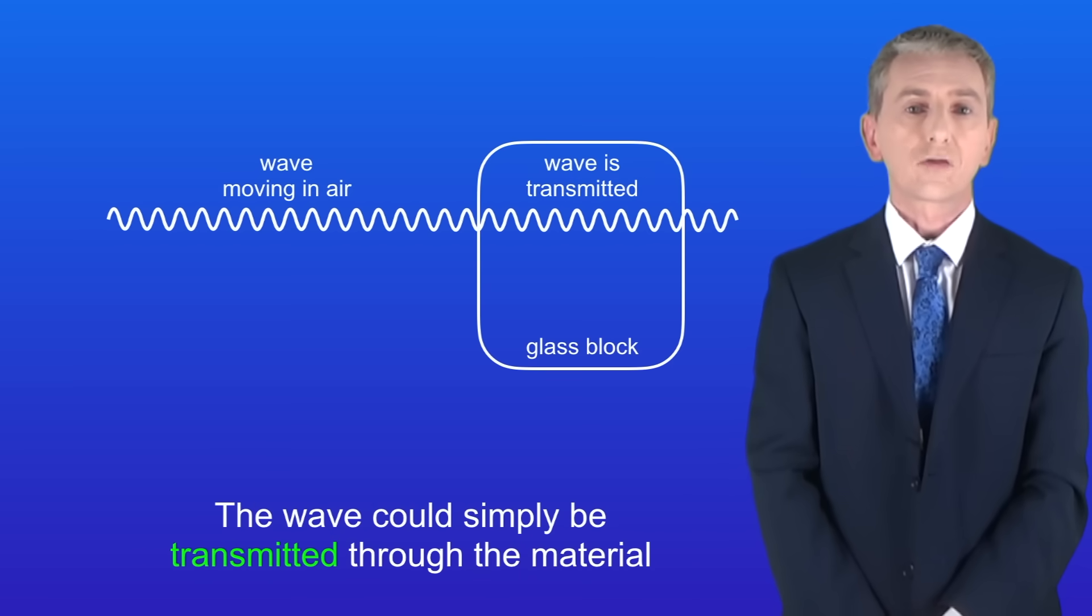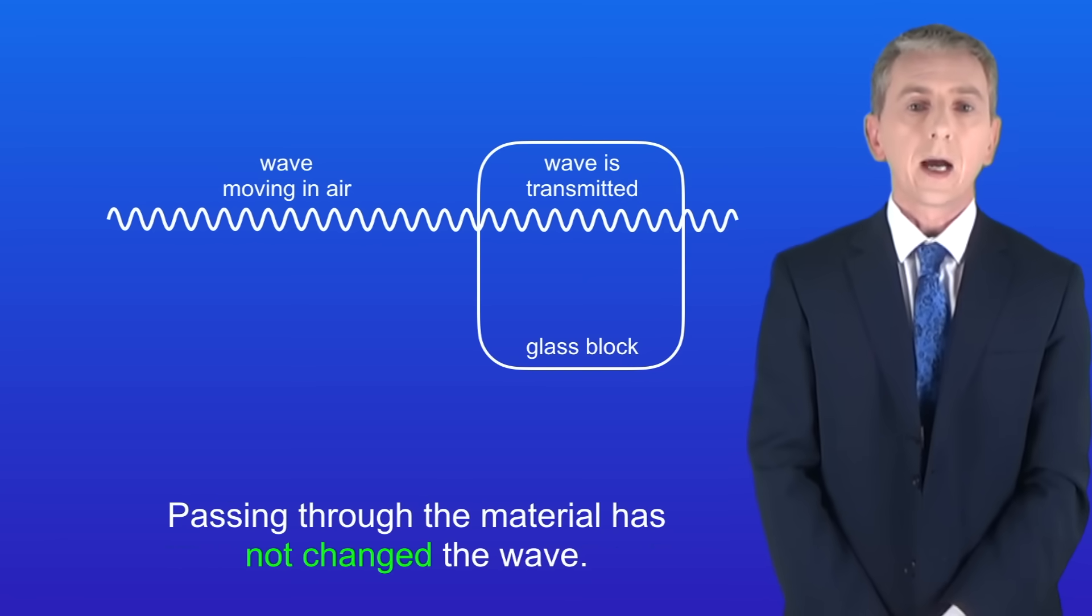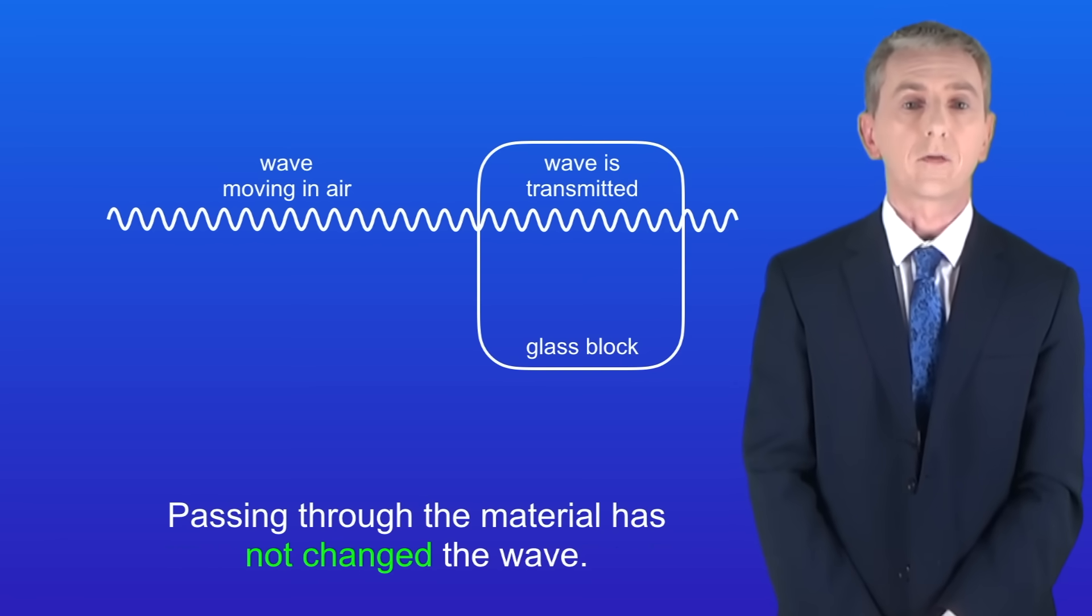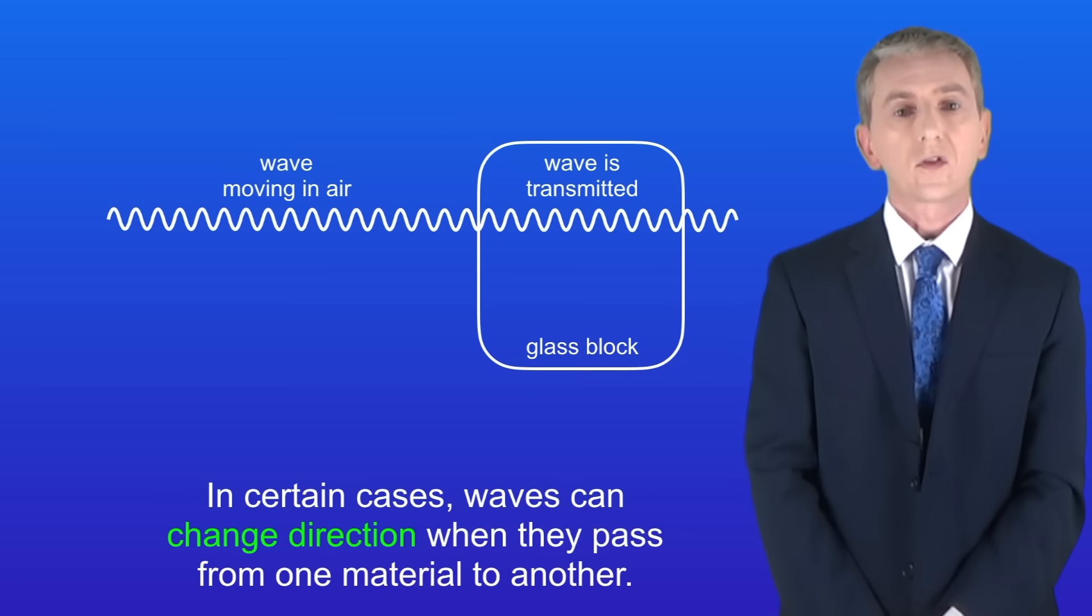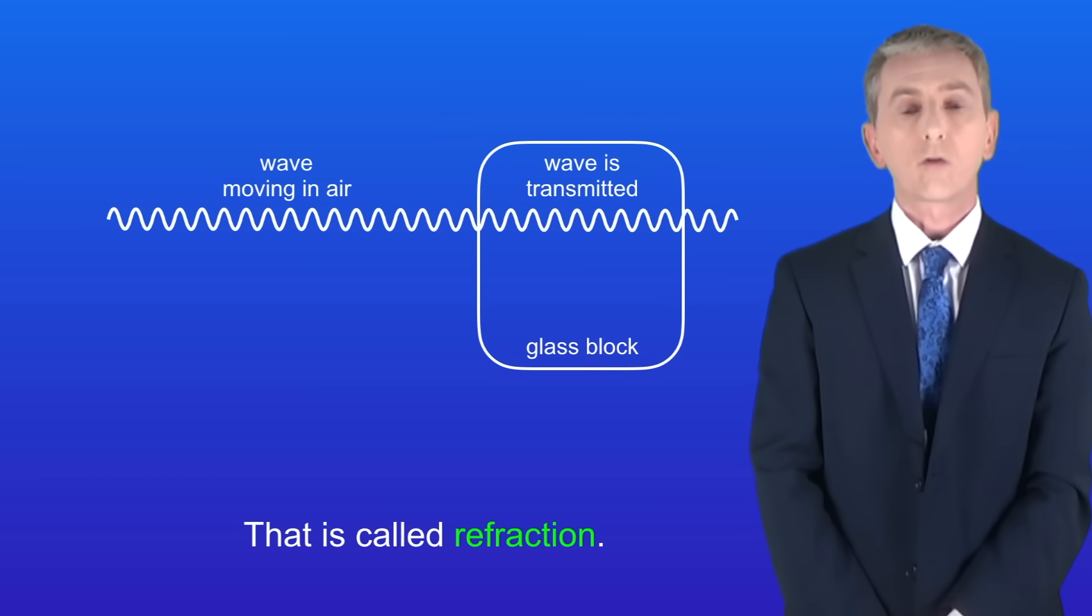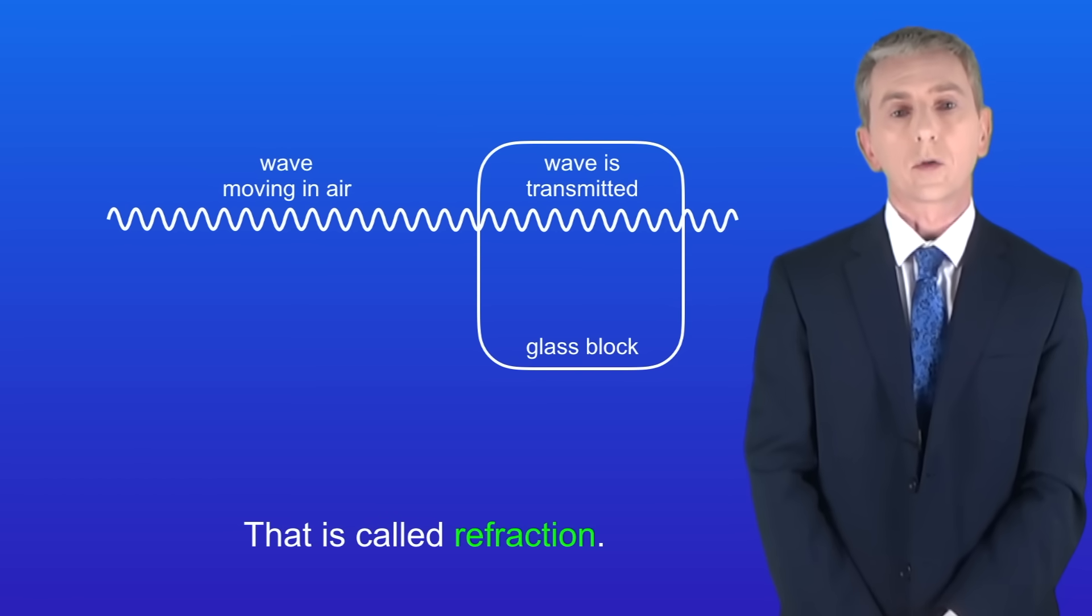Firstly the wave could simply be transmitted through the material and I'm showing you that here. As you can see passing through the material has not changed the wave. Now I should point out that in certain cases waves can change direction when they pass from one material to another. That's called refraction and we're going to be looking at that in later videos.